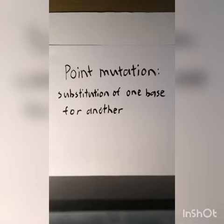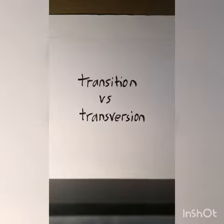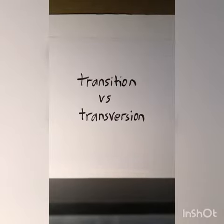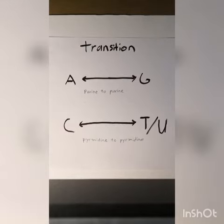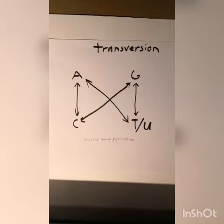A point mutation is the substitution of one base for another. There are two kinds of point mutations: transition and transversion. Transition is turning a purine to a purine or pyrimidine to a pyrimidine. Transversion is turning a purine to a pyrimidine and vice versa.